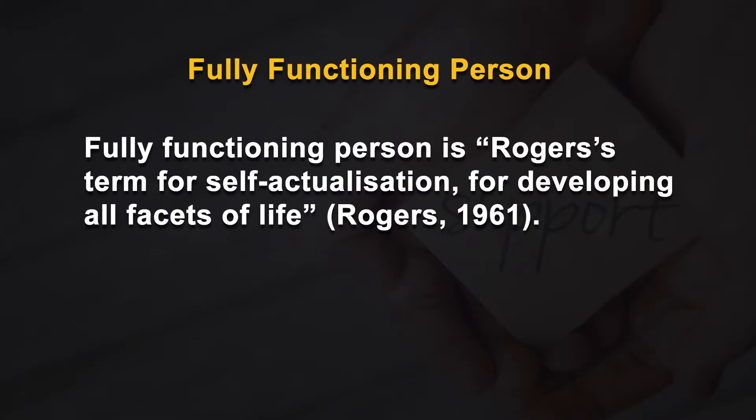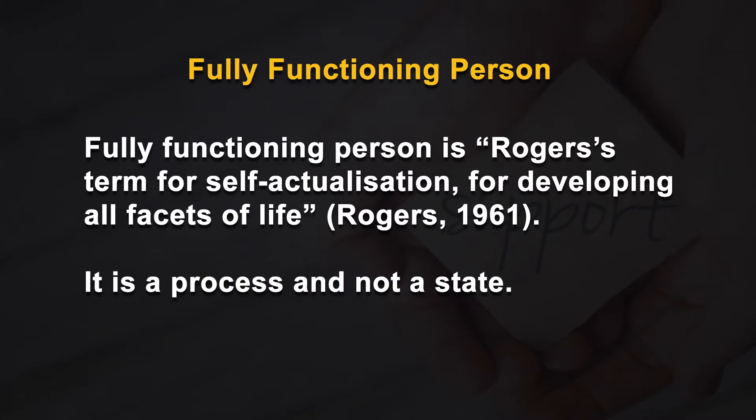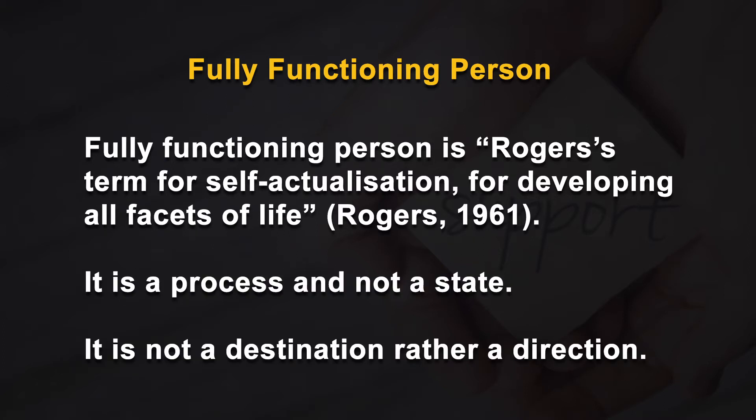Fully functioning person is Rogers' term for self-actualization. For developing all facets of life, it is a process and not a state. It is not a destination, rather a direction. These persons will reach an optimal sense of satisfaction in their life. These persons have few basic characteristics in common. Let us explore the unique characteristics of the fully functioning person and how they contribute to healthy, mature and adaptive living while being free from emotional turmoil and anxiety.